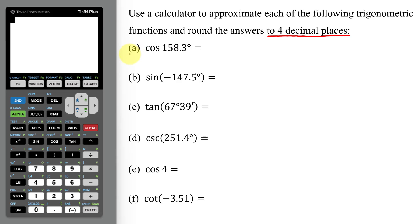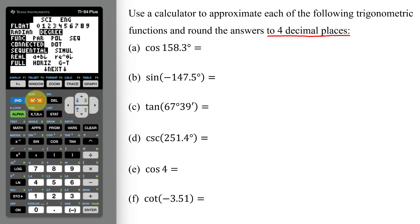In part A, I need to find the cosine of 158.3 degrees. Notice my angle is in degrees, so I need to check the mode of my calculator. Notice radians is not highlighted, but degrees is, so my calculator is in degree mode.